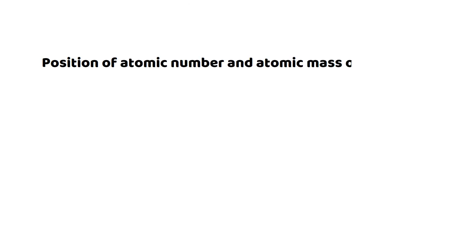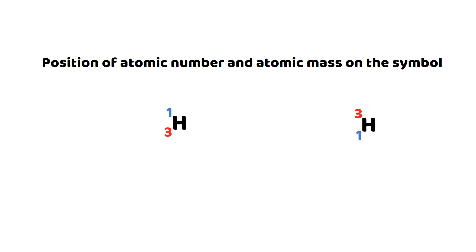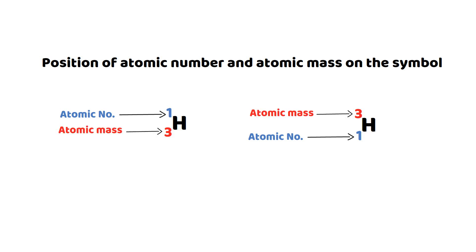An important point about the position of atomic number and atomic mass on the symbol: atomic number can be shown at the left top or left bottom of the symbol, and atomic mass at the other position. Both ways are correct. What we have to remember is that the smaller number is always the atomic number, and the bigger number is always the atomic mass.